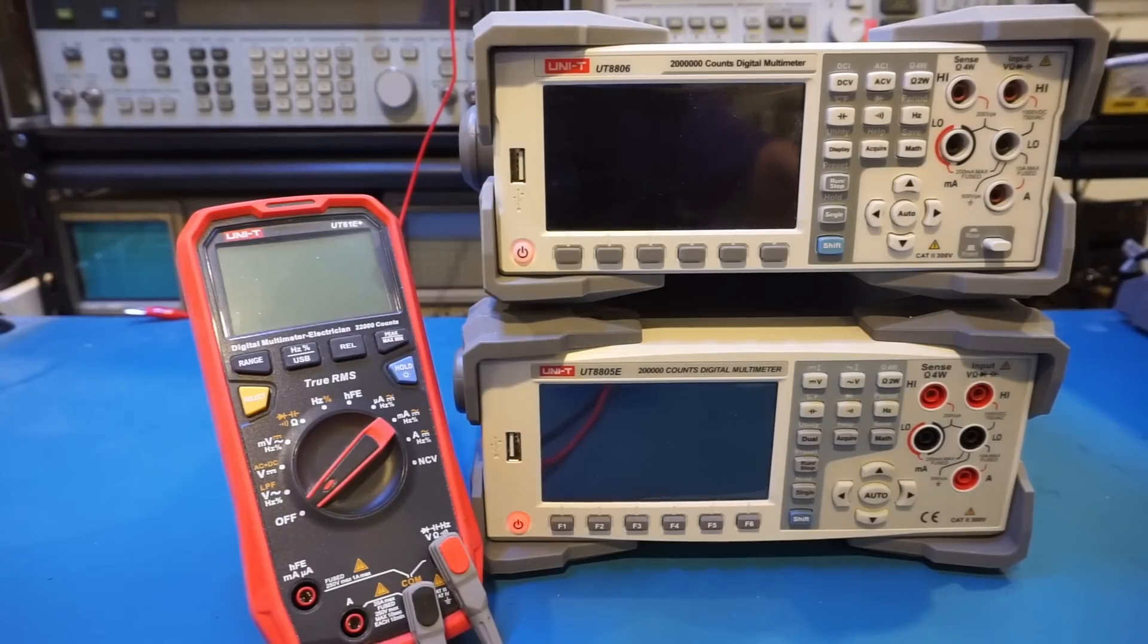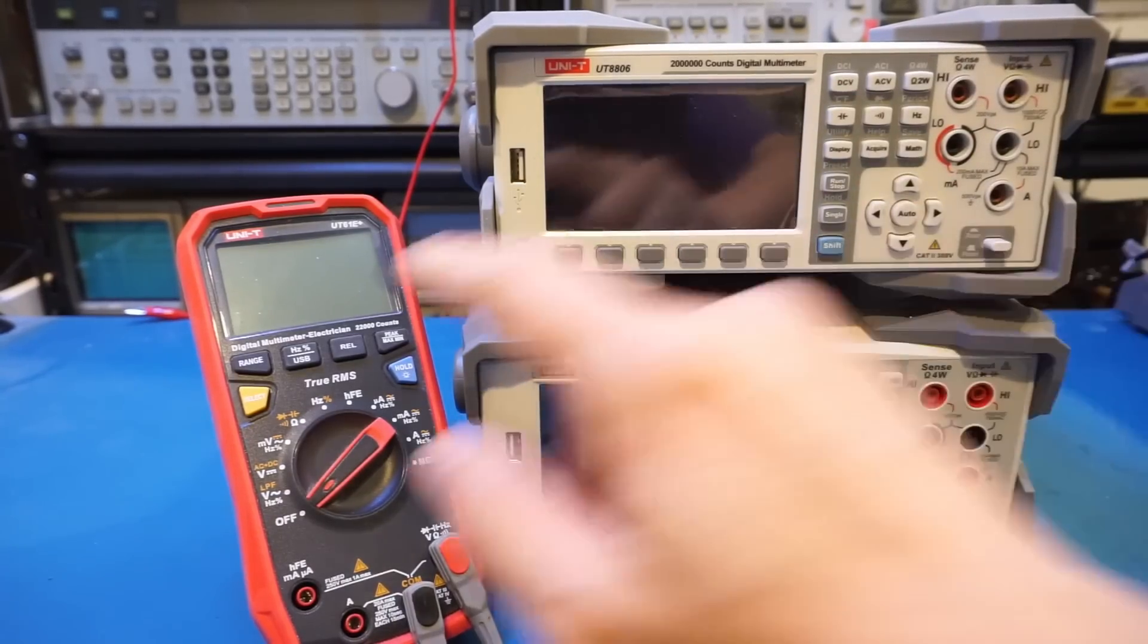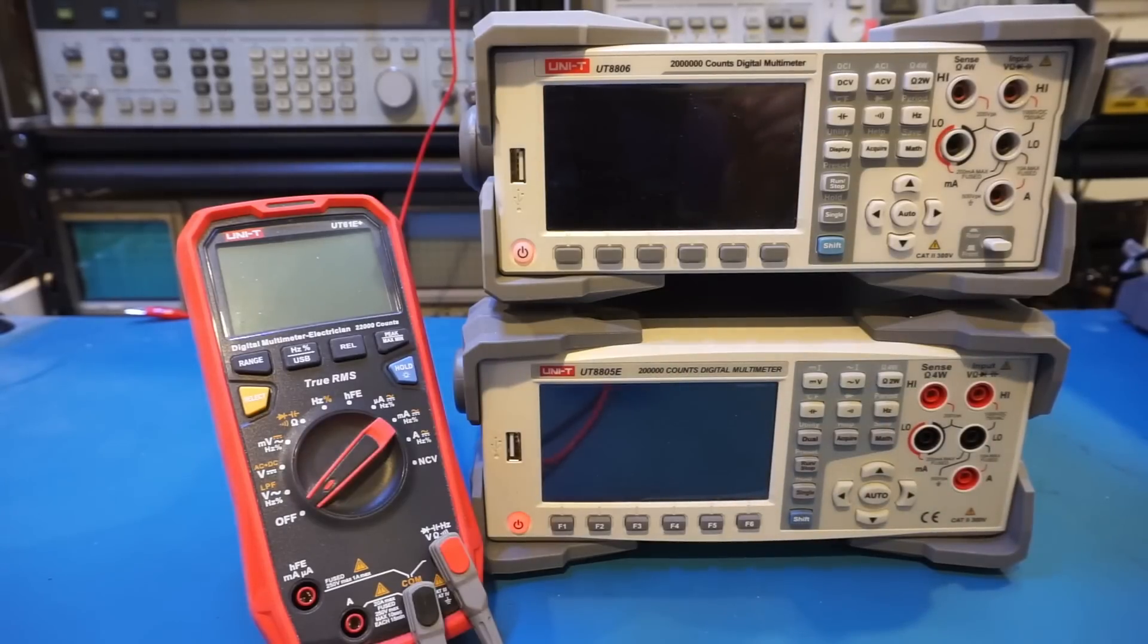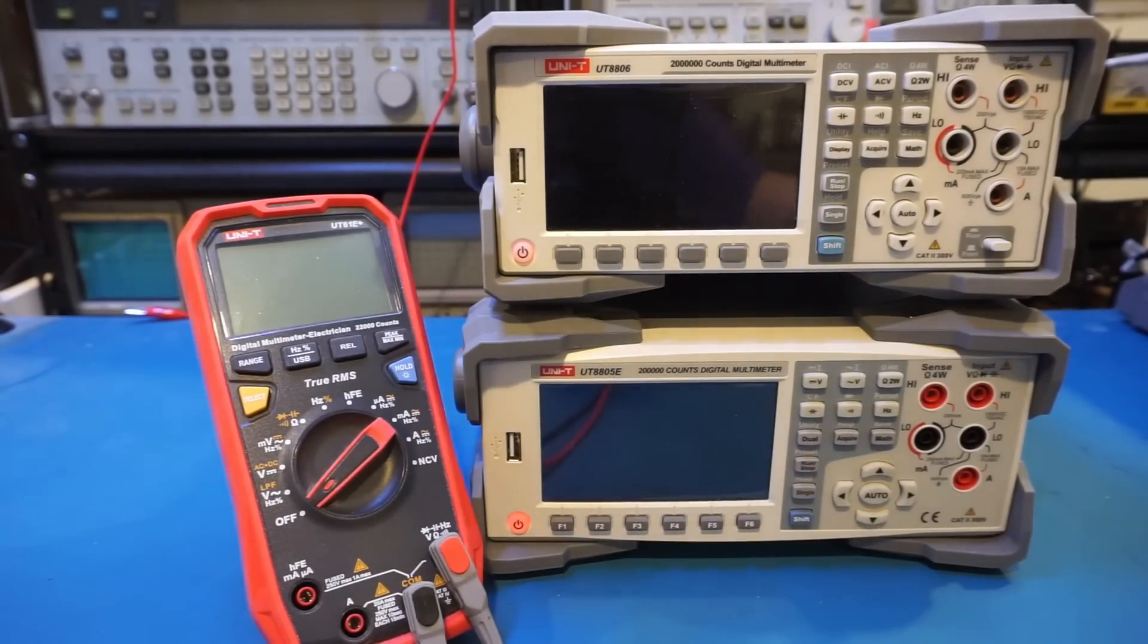On the workbench here I have three Unity meters at the moment, two bench top ones and a handheld one. The UT601E plus is a 22,000 counts meter, the Unity UT8805E is a 200,000 counts meter.